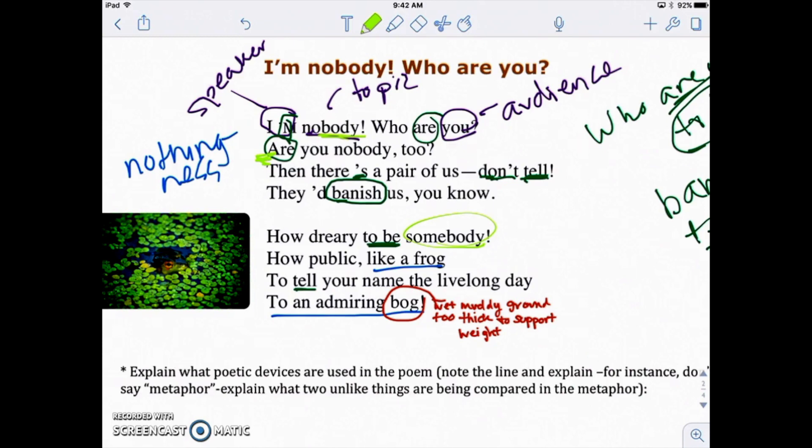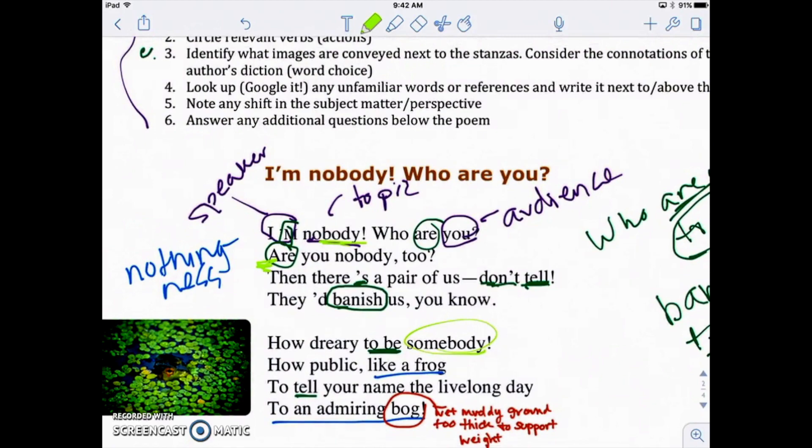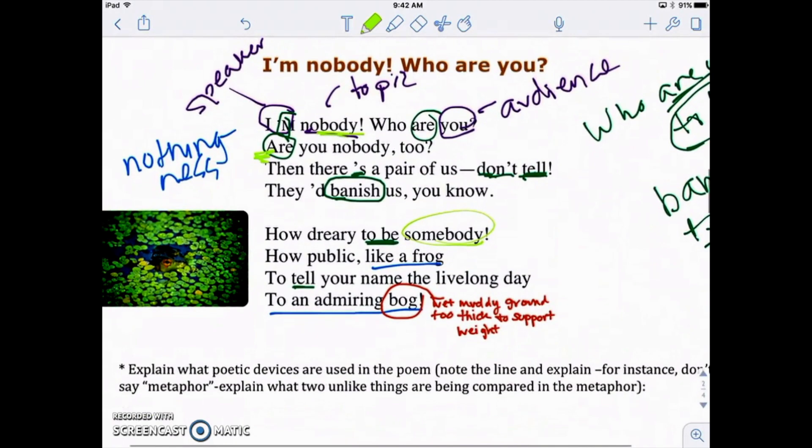However, the idea is still the same. I'm nobody. Who are you? She's excited about that fact. Are you nobody too? Then there's a pair of us. Don't tell they'd banish us. You know, how dreary to be somebody. So now again, it's a shift, but we're really talking about the same type of thing. I'm excited to be nobody. And it's kind of a bummer. It's dreary to be somebody, right? Okay. And then this, the last step, step six is to answer any additional questions below the poem. Before we do that though. Actually let's do that.